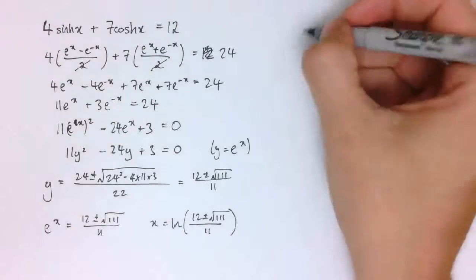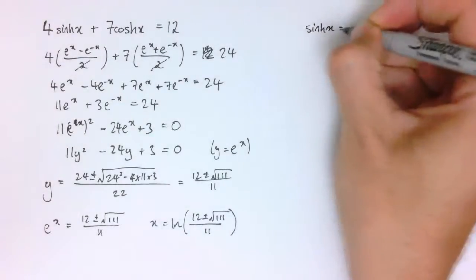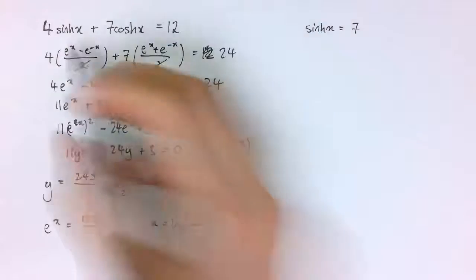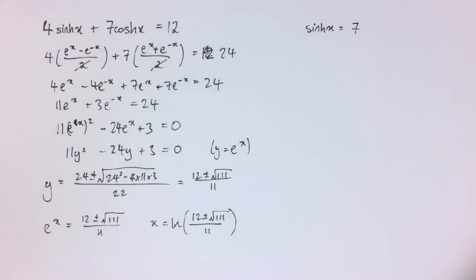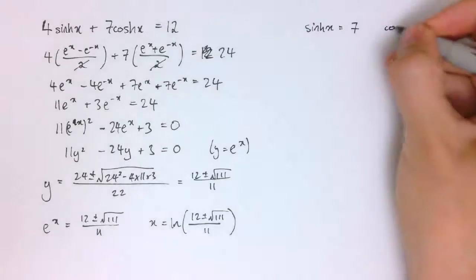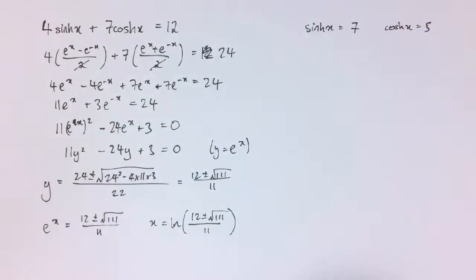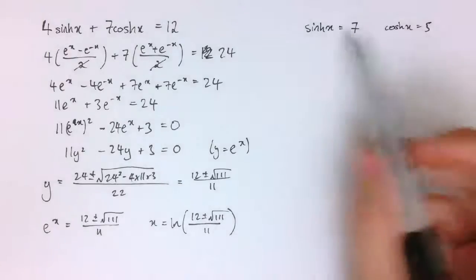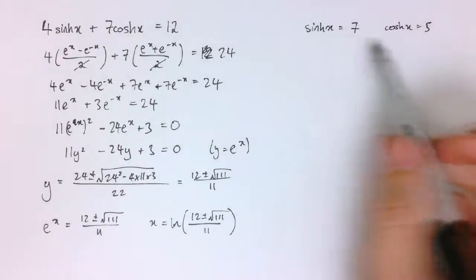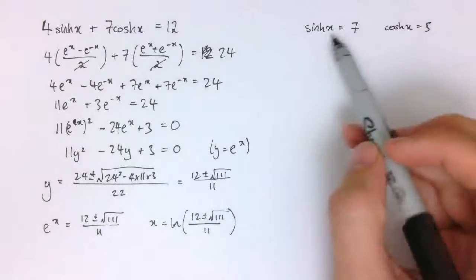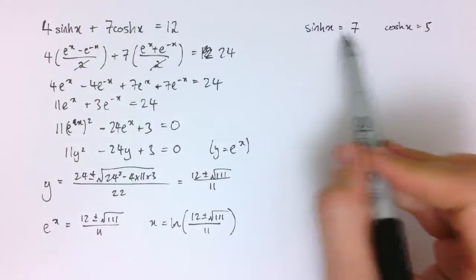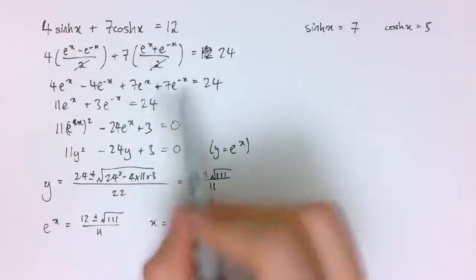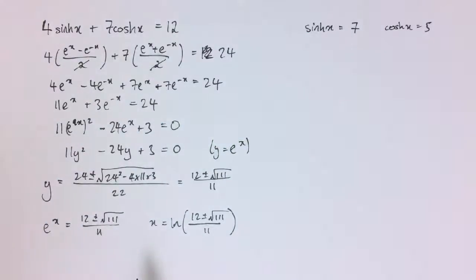You could also use it of course just to solve something simple like sinh(x) equals 7. You could replace sinh with e^x minus e^(-x) divided by 2, multiply it out, it's exactly the same thing, or cosh(x) equals 5 or something like that. We're going to look at those sorts of things in a bit more detail later because what we're essentially doing there is looking at an inverse function, so I could say actually x is just inverse sinh of 7. But the way we'll work out those inverse functions is essentially doing something exactly like this.